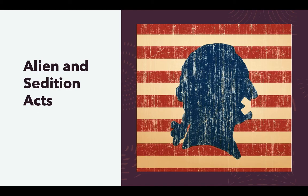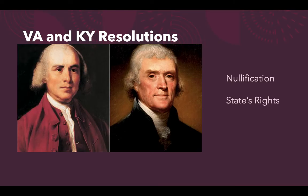Another act was called the Sedition Act, which set fines and jail terms for anyone trying to hinder the operation of government by expressing malicious, false, or scandalous statements against the government. Basically, if you just spoke out against the Adams administration, you could be prosecuted and jailed. With the Federalists in power, it was Democratic-Republicans — Jeffersonians — who were being locked up most frequently, especially editors of Democratic-Republican newspapers and even Democratic-Republican politicians. Outraged Democratic-Republicans called this a violation of their free speech, guaranteed under the First Amendment.